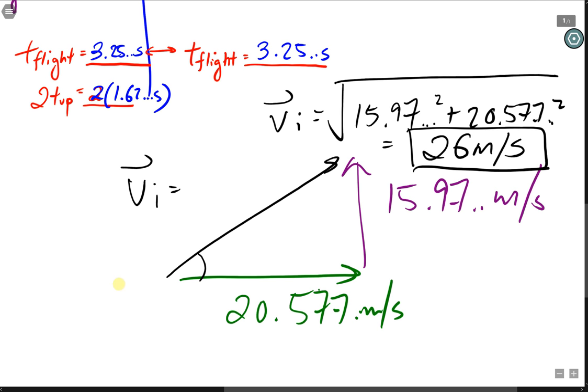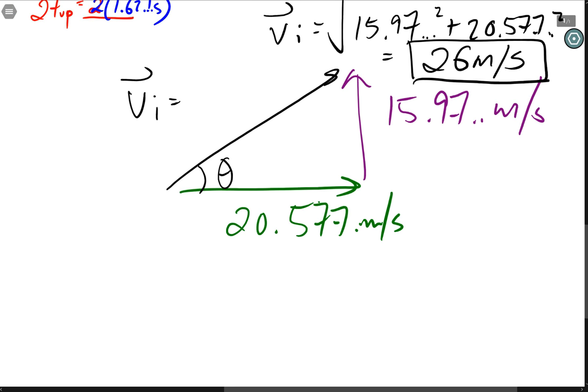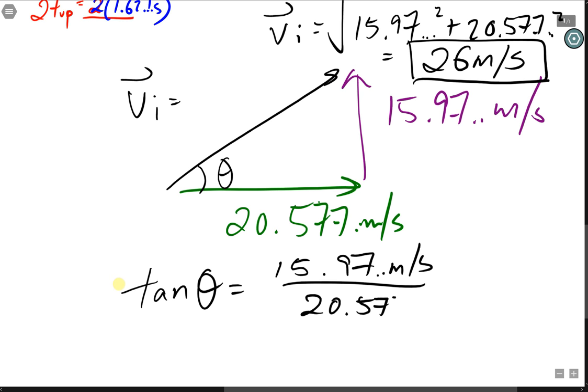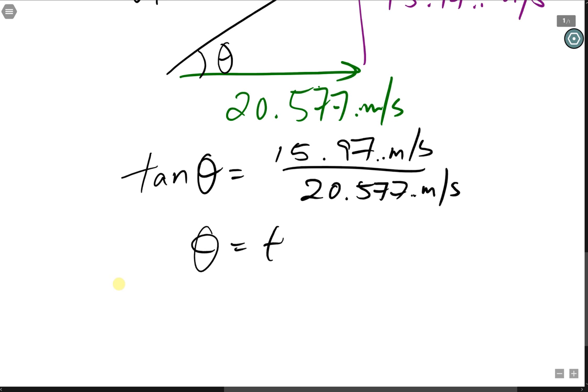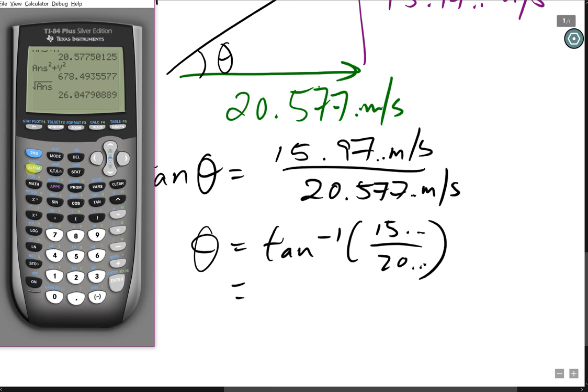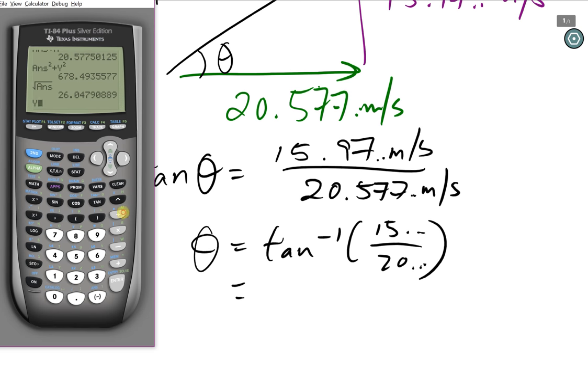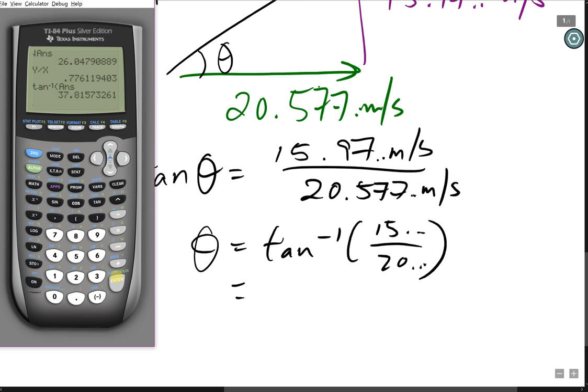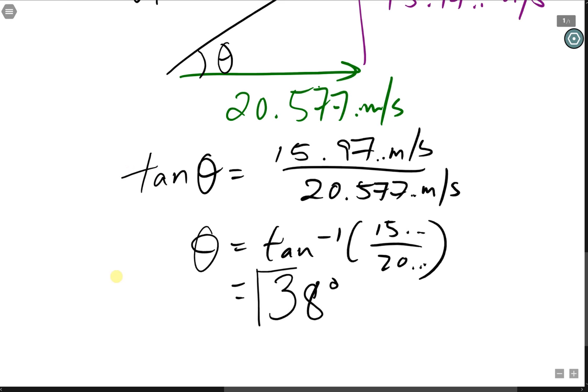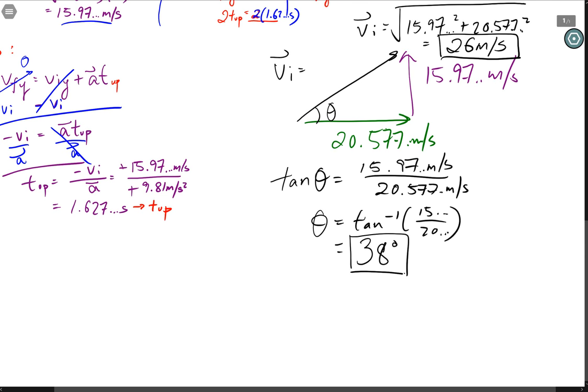We are not done because as a vector, a vector needs direction. To find our direction, we need to find our angle. Here we can use our SOHCAHTOA. This one's our tan theta opposite over adjacent. This is 15.97 meters per second over 20.577 meters per second. Taking the inverse of tan on your calculator, we get this is y vertical divided by x horizontal. And taking the inverse tan, this gives us 37.8 degrees or rounded up to two significant figures, 38 degrees above the horizontal. And in our final answer, we can write this as 26 meters per second at 38 degrees.